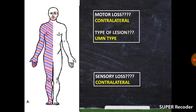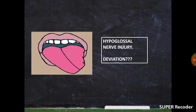Next, we'll focus on sensory loss, which is due to involvement of the medial lemniscus. Note that the dorsal column tracts decussate in the lower part of the medulla and then ascend in the medial lemniscus. So if there is a lesion in the left medial lemniscus, there will be contralateral sensory loss, because decussation has already occurred. There will be loss of sensations carried by the dorsal column tracts — namely proprioception, vibration sense, tactile discrimination, and stereognosis — on the contralateral side.